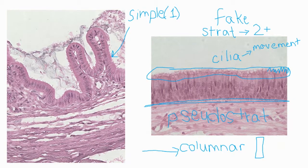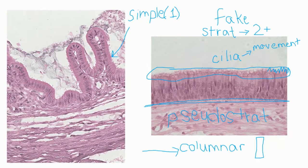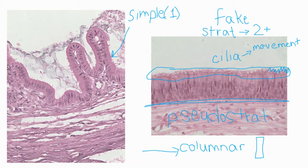That is an example of anatomy being related to physiology. Anytime you see cilia — that's my anatomy — my physiology is moving stuff. Cilia always moves stuff. So the full name for my tissue on the right over there is ciliated pseudo-stratified columnar epithelium. If you had taken this class a year or two ago, you would have had to write all of those words without any help.